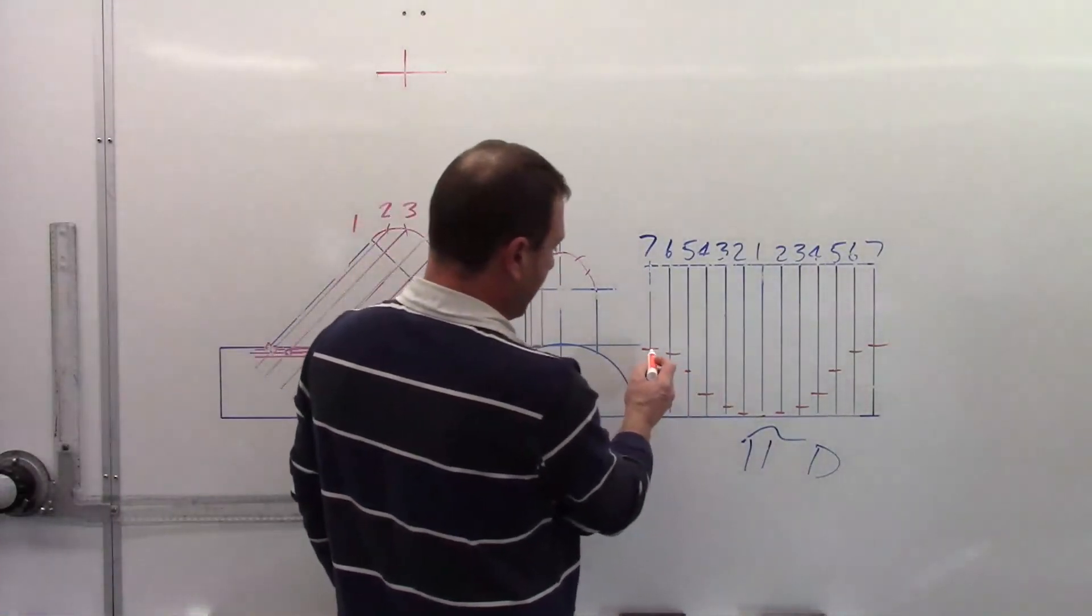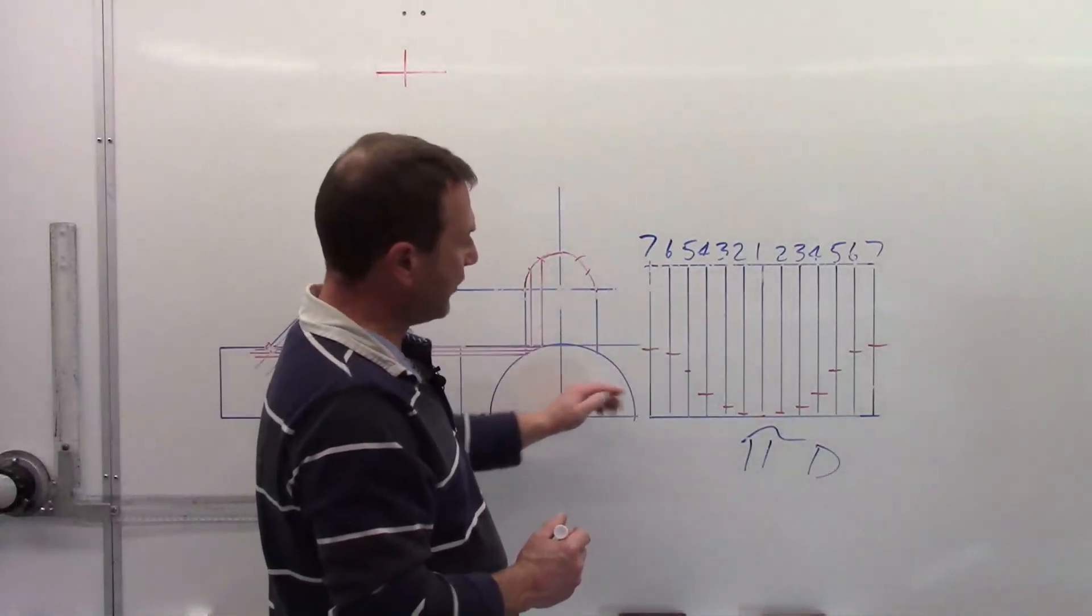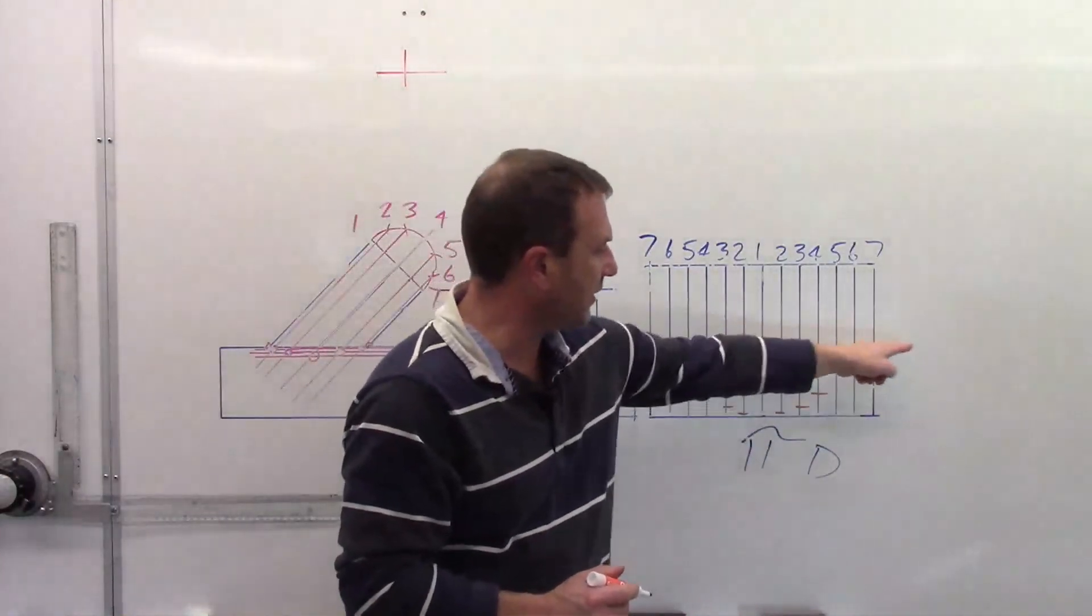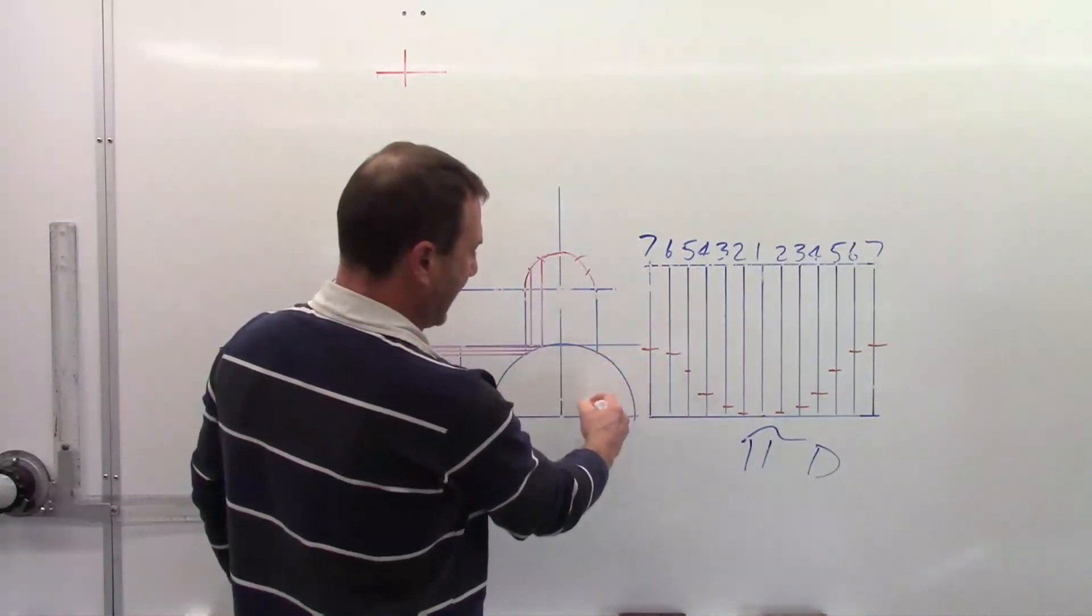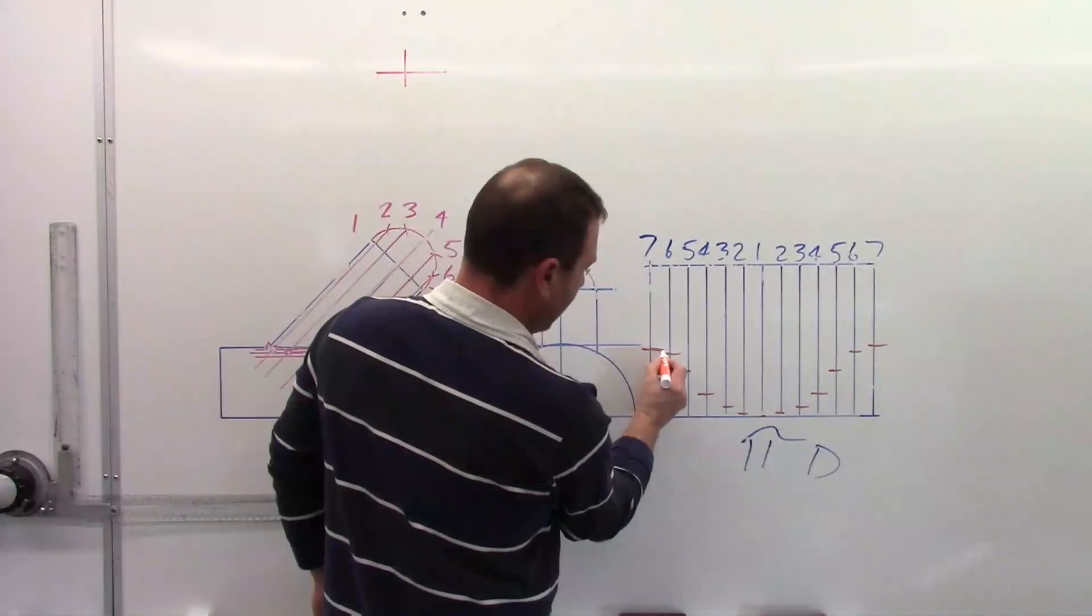So that is our pattern. Now again, things we have talked about before. We know there is a change in direction here. By the way, it comes back together. So this will actually be going down on the other side. So we need to make sure that comes in ready to go down.